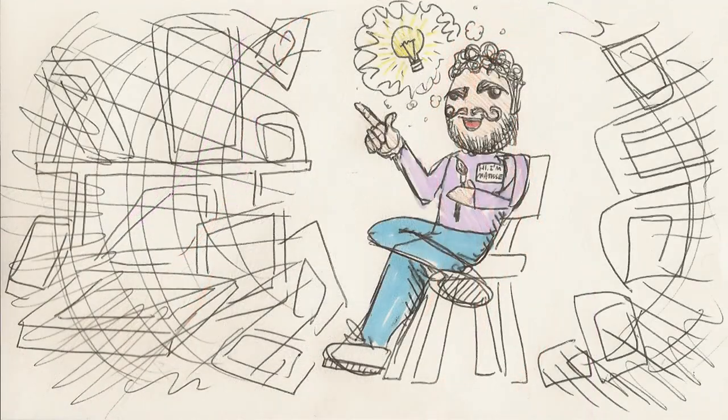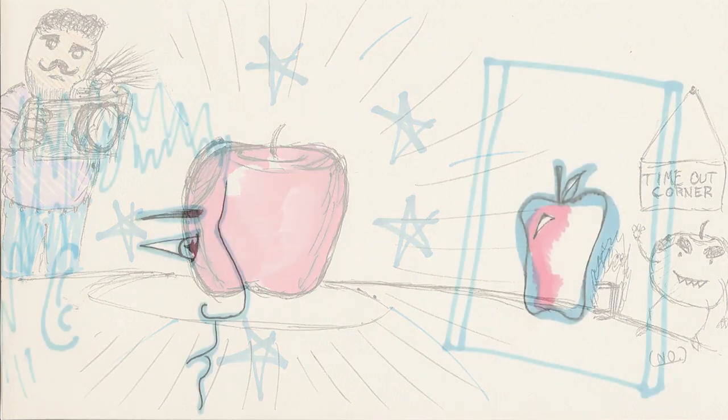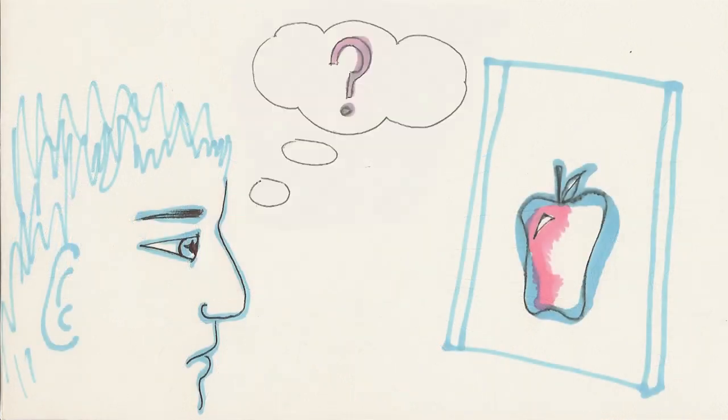If Matisse's intent had been to paint tables or apples exactly as they appear in real life, one may have a harder time calling his paintings art.